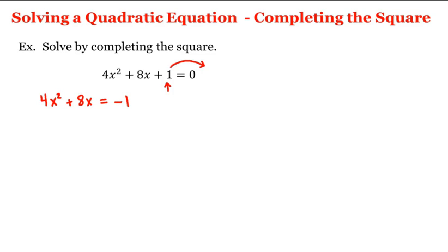Now with completing the square, it is very important at this point to make sure that the coefficient of this square term is equal to 1. And right now it is equal to 4. So what we need to do is divide both sides of the equation by 4.